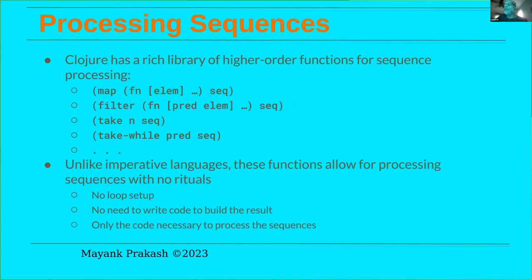So transducers — what is the problem here? Like most functional languages, Clojure has a rich library of higher-order functions for sequence processing: map, filter, take, take-while, drop, partition, and so on. All of them go through a sequence step by step and do something with the elements. This is in contrast to imperative languages where you set up a loop, define variables, and write code to build the output. In a functional language like Clojure, all of that is hidden from you — you just say what needs to be done to your sequence elements, which simplifies things a lot.